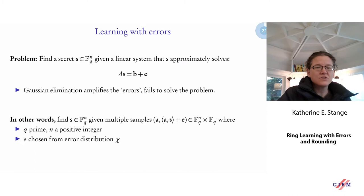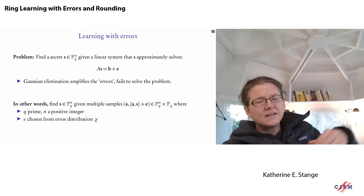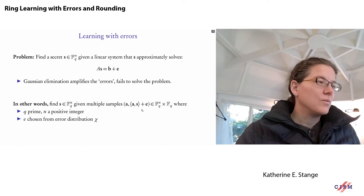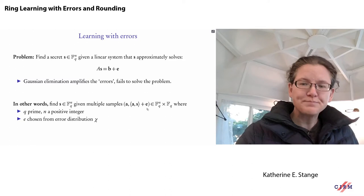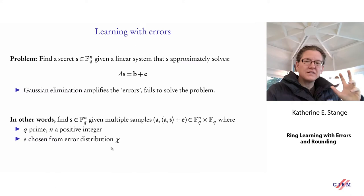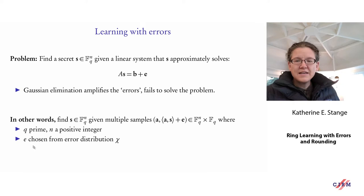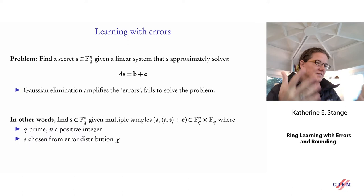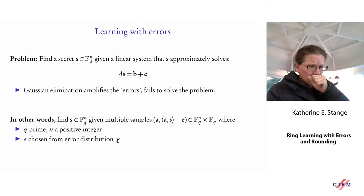This seems to be a hard problem. It's usually phrased in terms of samples: each almost-linear equation is a sample living in F_q^n × F_q — my vector a and then a·s + e, which we can't separate. We pick q to be some prime, n a positive integer; together they form the security parameter since the search space is size q^n. The error e must be chosen from some error distribution — if chosen uniformly the samples would be garbage with no information.